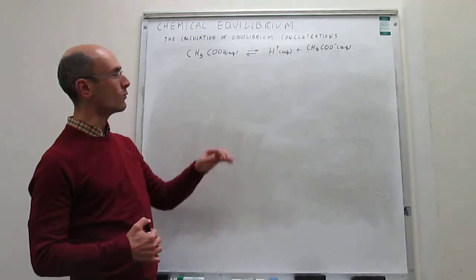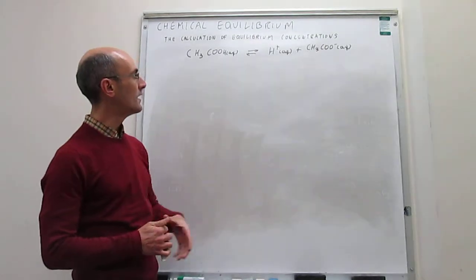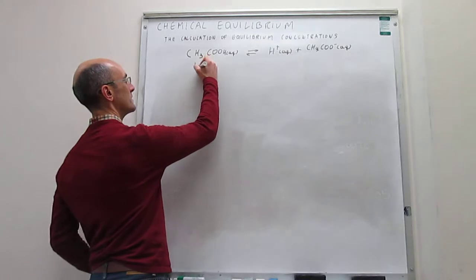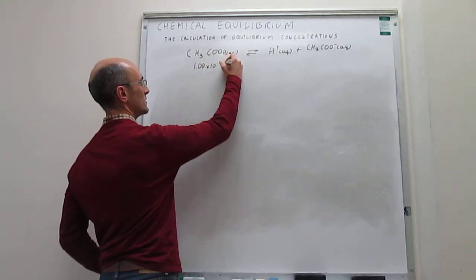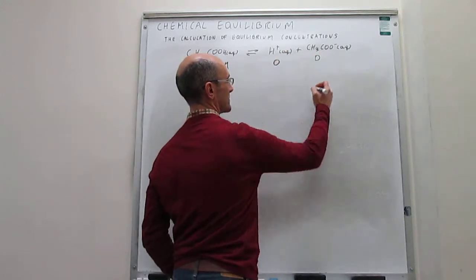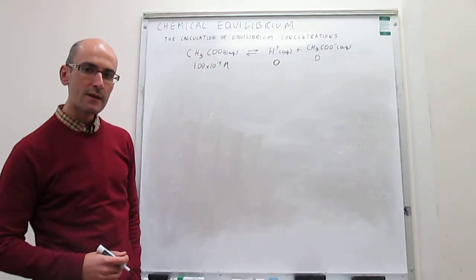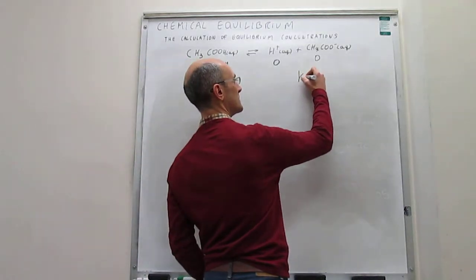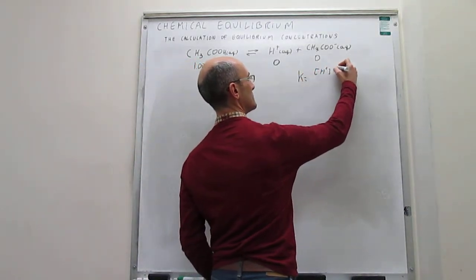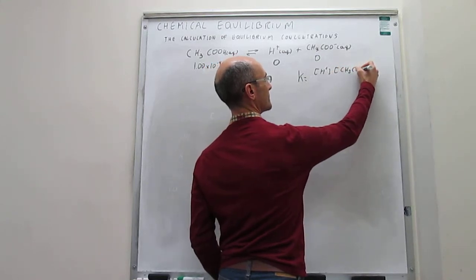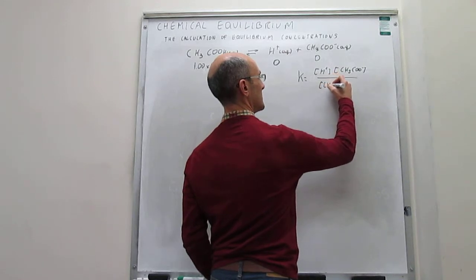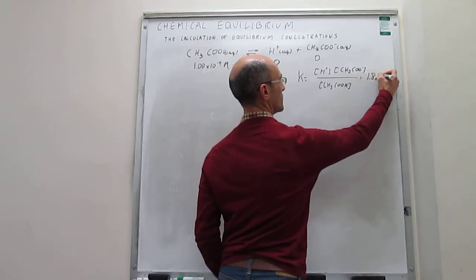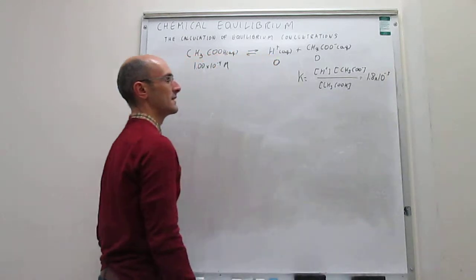Let's set up the example with the equilibrium of acetic acid deprotonating to give a proton and acetate. We are going to start the reaction with 1.00×10⁻⁴ molar concentration of acetic acid and no products. The equilibrium constant for this process is the concentration of protons times the concentration of acetate over the concentration of acetic acid, equal to 1.8×10⁻⁵.